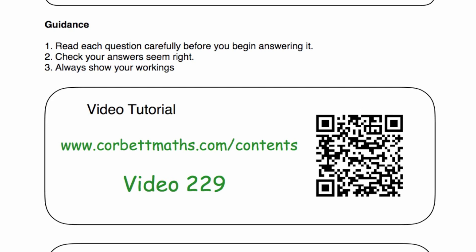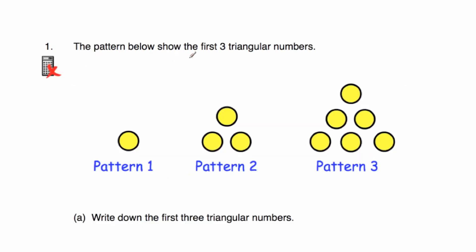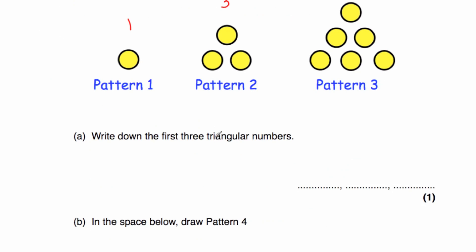Our first question says the pattern below shows the first three triangular numbers. So we've got pattern one with one dot, pattern two with three dots, and pattern three with one, two, three, four, five, six dots. So we've got one, three, six. Part A says write down the first three triangular numbers, so they would be one, three, and six.